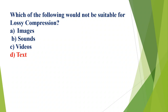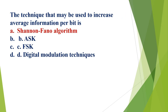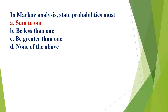Which of the following would not be suitable for lossy compression? A) image, B) sound, C) videos, D) text. The correct option is D, text. The technique that may be used to increase the average information per bit is: A) Schoenfeld algorithm, B) ASK, C) FSK, D) digital modulation technique. The correct answer is A, Schoenfeld algorithm.